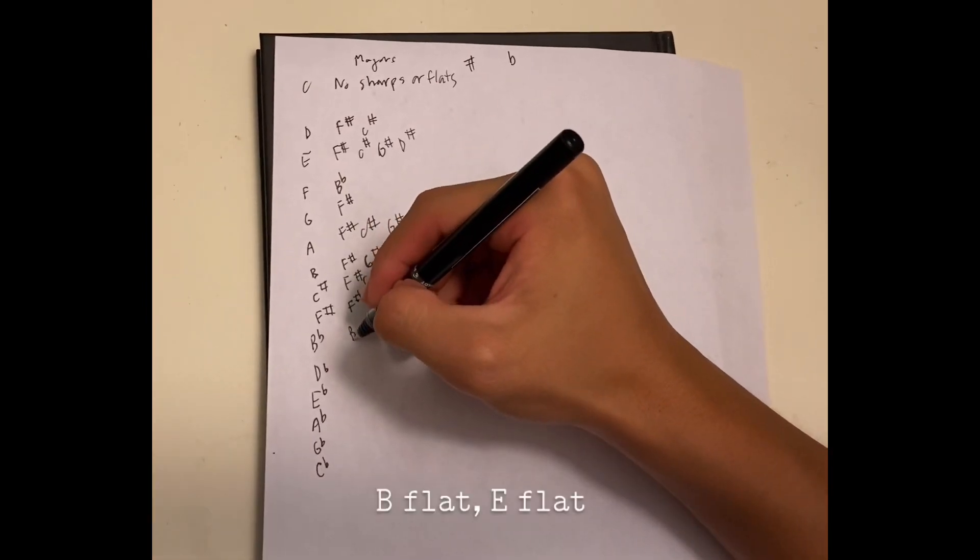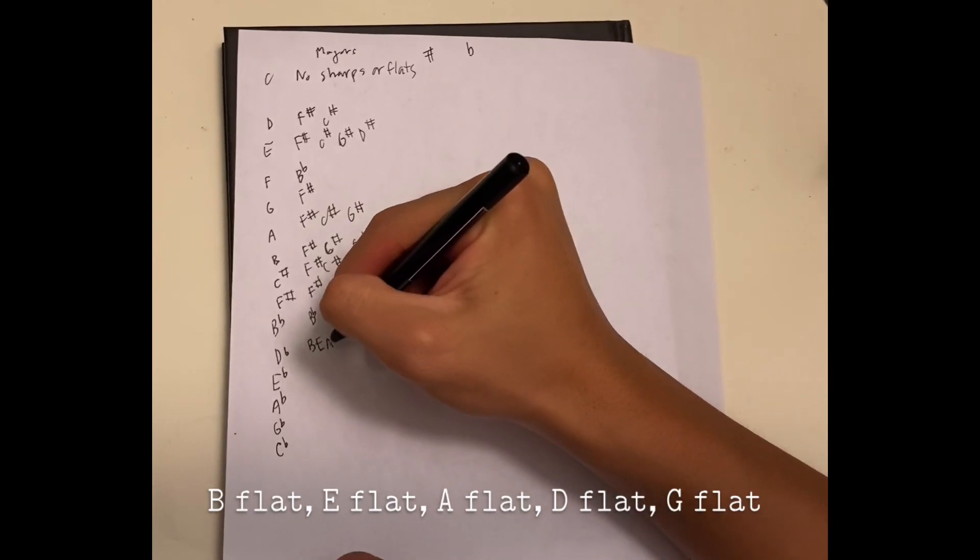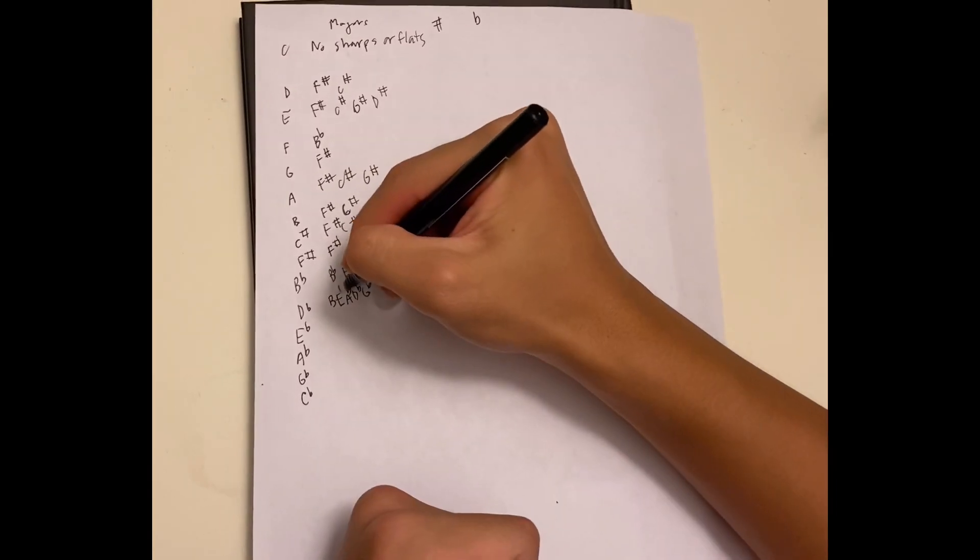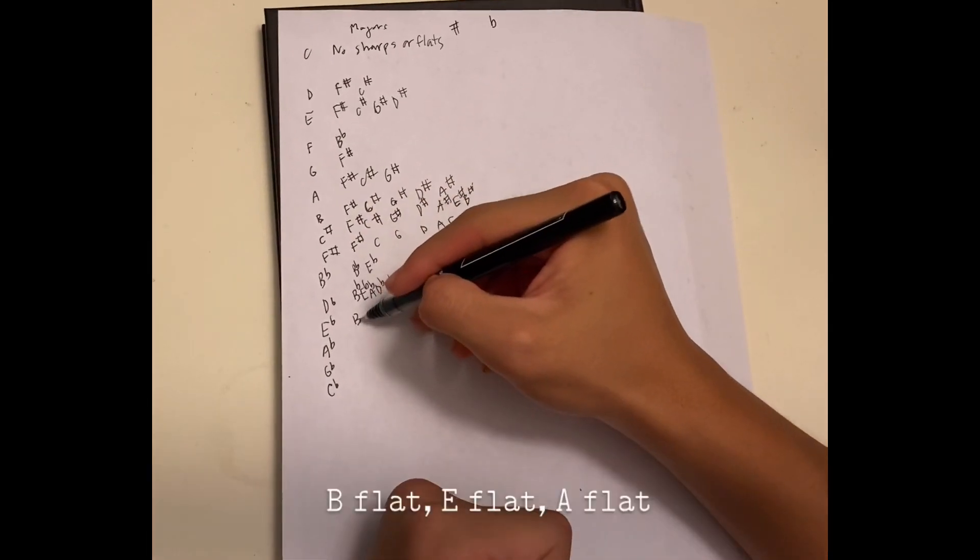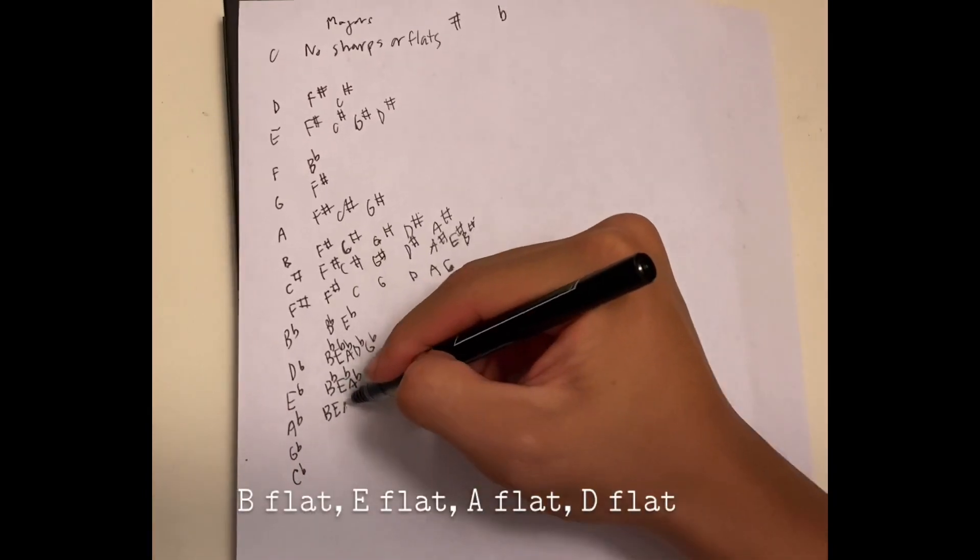D flat major: B, E, A, D, G. So all these are flats. B flat major: B, E, A. These are all flats. A flat major: B, E, A, D.